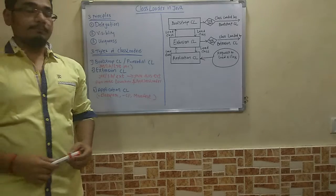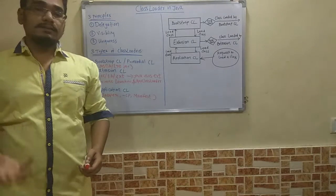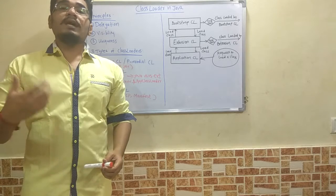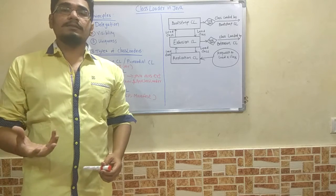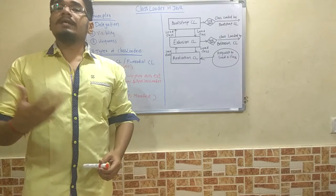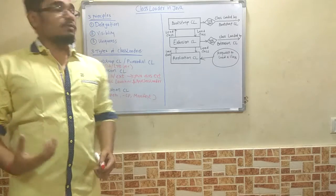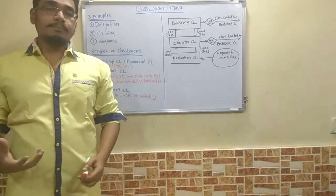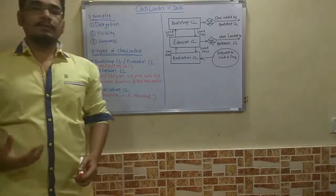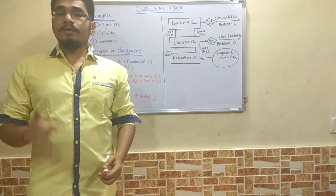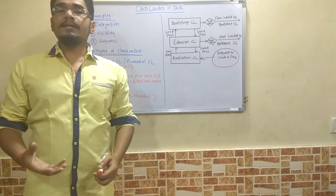Next is visibility. Visibility states that all the child classes are visible to the parent classes, but parent classes cannot see all the child classes which they are loading. Uniqueness states that each class file should be loaded only once, not multiple times.